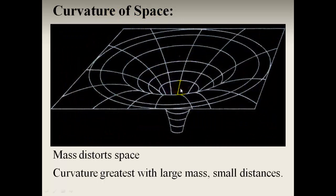It's difficult to represent this in two dimensions, but near a massive object, four-dimensional space-time is warped — represented here as a two-dimensional surface warped downwards. If you wanted to go from the left side to the right side, you can't take the diagonal straight line because you'd fall into the well. The shortest line has to go around the surface. As Einstein says, objects must follow the shortest possible path.